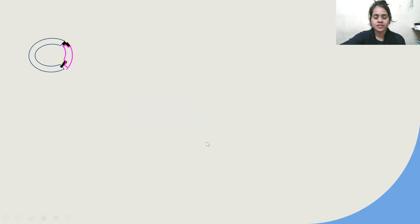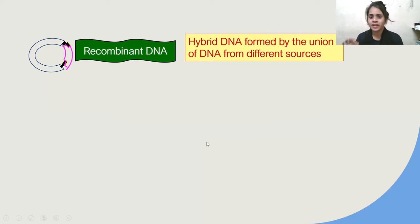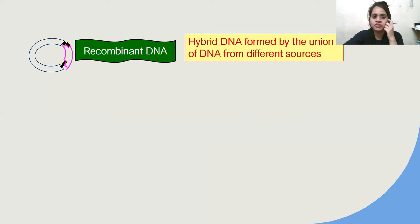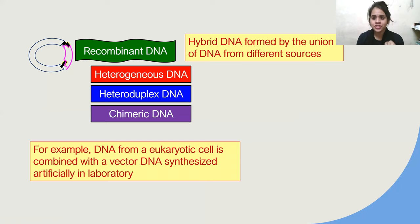So what is recombinant DNA? Recombinant DNA is a hybrid DNA which is formed by the union of DNA from different sources. The word itself says 'recombinant' — hybrid means there is a combination of DNA. It is formed by the union of DNA that has come from different sources, and that is why recombinant DNA is also called heterogeneous, heteroduplex, or chimeric DNA.